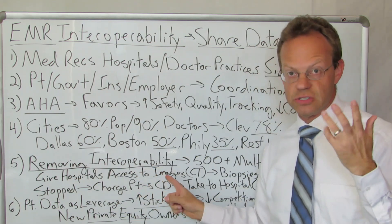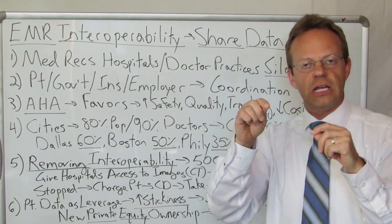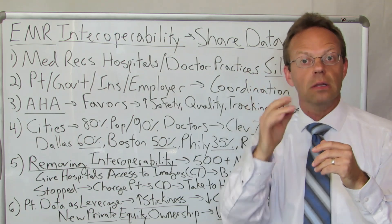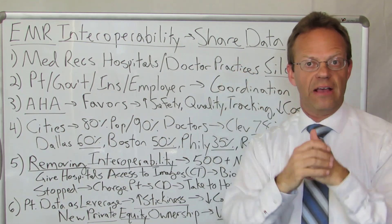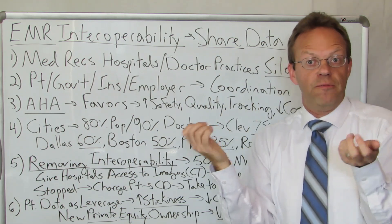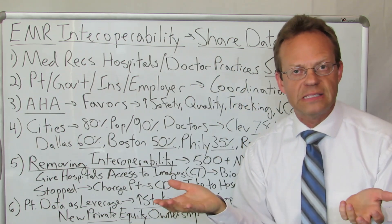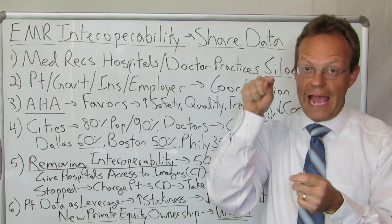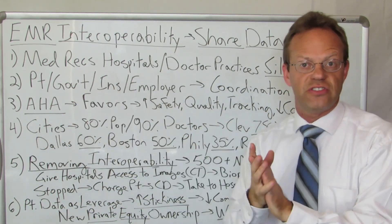They would share that information, including the images, with the hospital systems. They gave access to CT images specifically. My friend happens to be an interventional radiologist — they use imaging to biopsy things like cancerous nodules in the lung or liver. The interventional radiologist needs the CT scan that initially found the nodule so they know where to target the biopsy. It was very helpful because they could go into the multi-specialty practice's EMR, see the CT scan, and wouldn't need to repeat it.